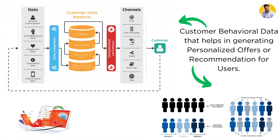That behavioral data includes customer demographic information, personal information, banking information, past product performance — like how they performed on past loans or products they purchased — and their hobbies as well. Every kind of customer personal and behavioral data is used to generate these personalized recommendations and suggestions.